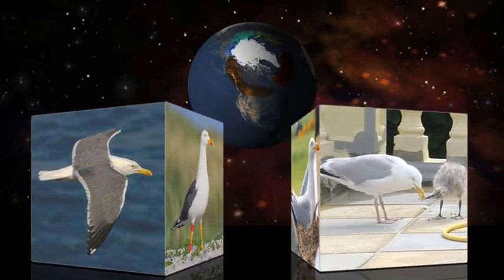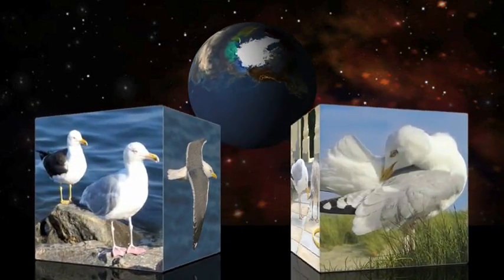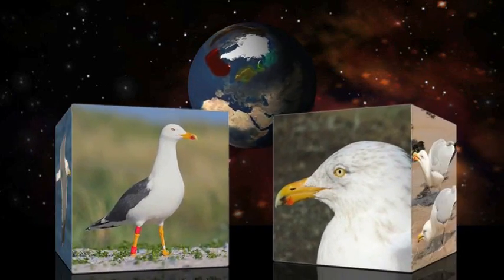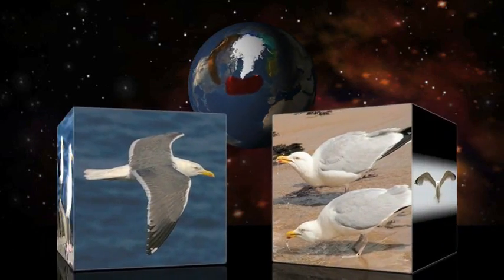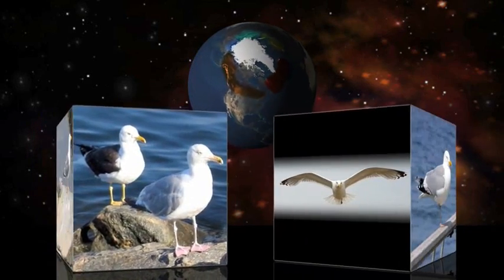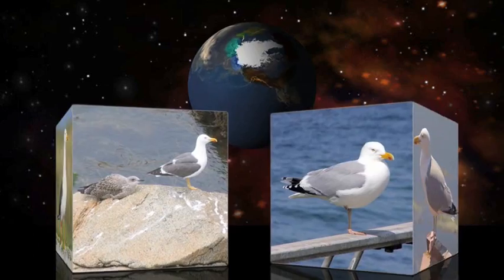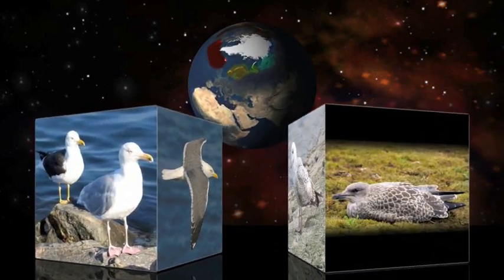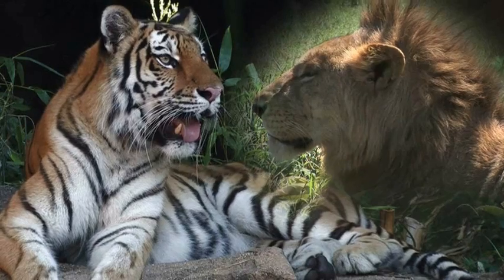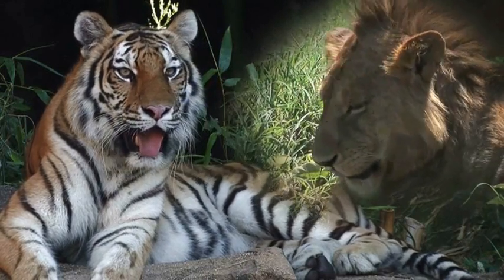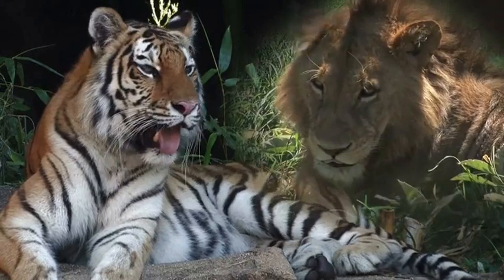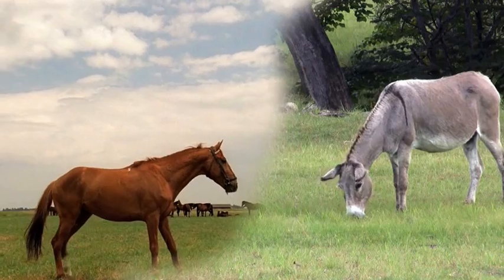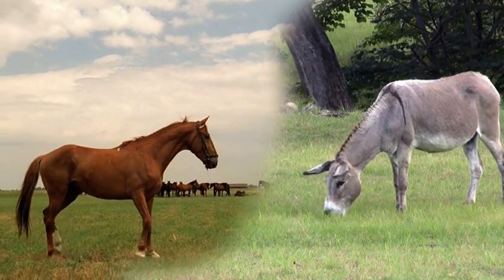These two gulls were originally identified as distinct species in England since they didn't interbreed. However, there is a continuous ring of their hybrids extending to the East and the West all the way around the North Pole. Only in England are they incapable of interbreeding. Many other species can mate and produce viable hybrids, like lions and tigers, or horses and donkeys, but the hybrid offspring aren't fertile.